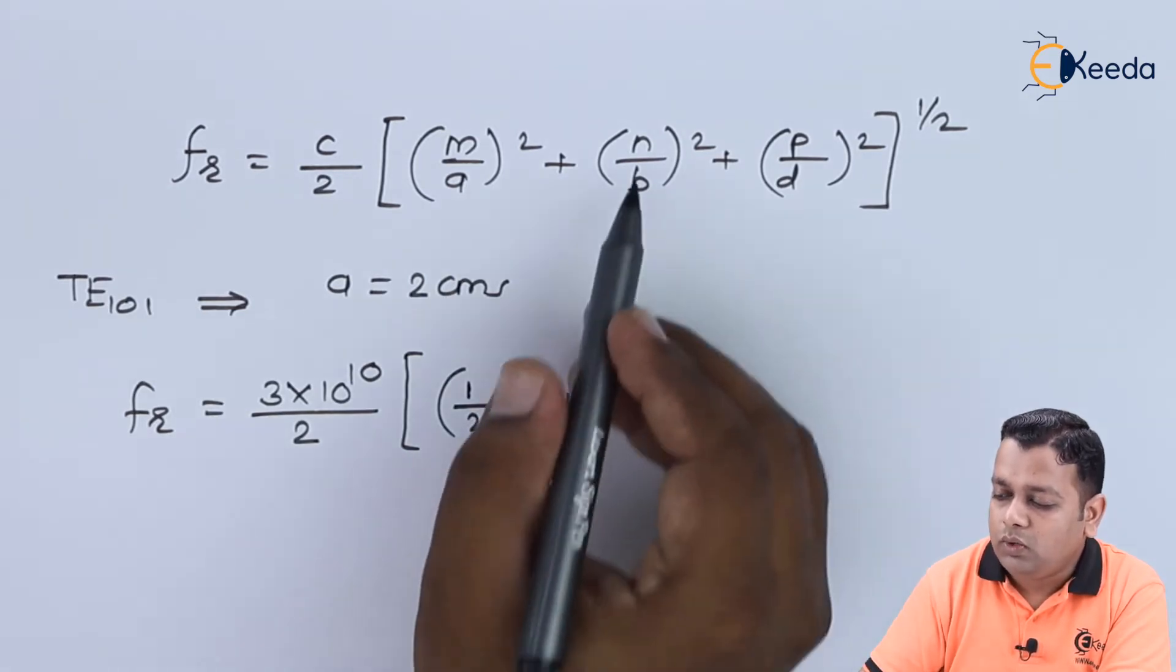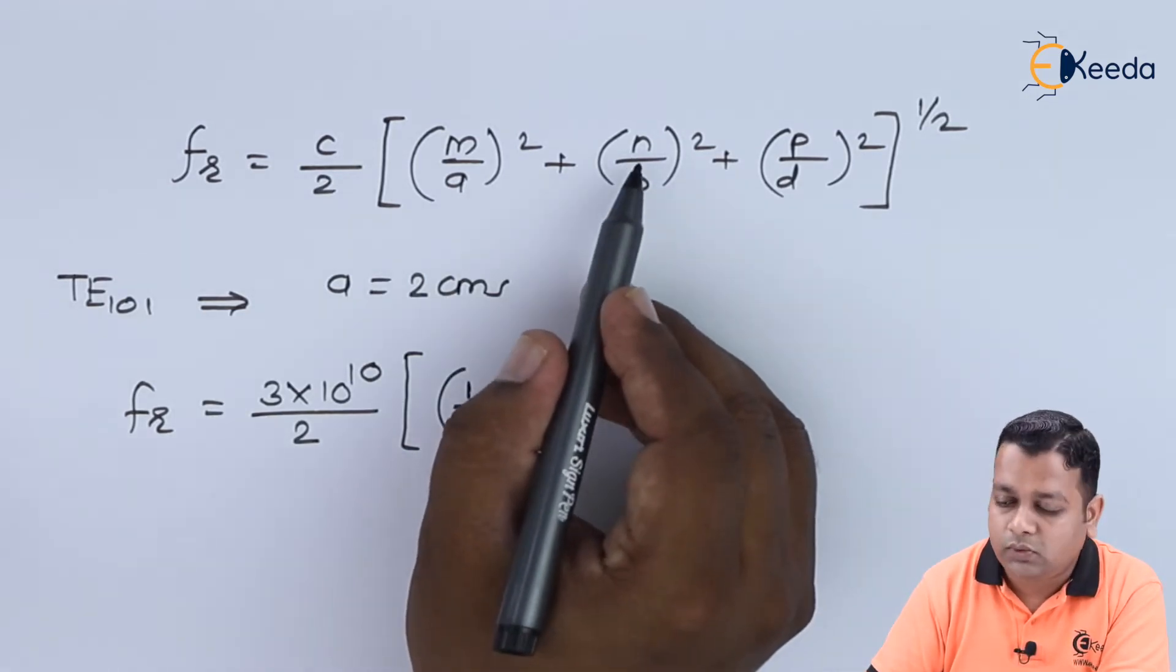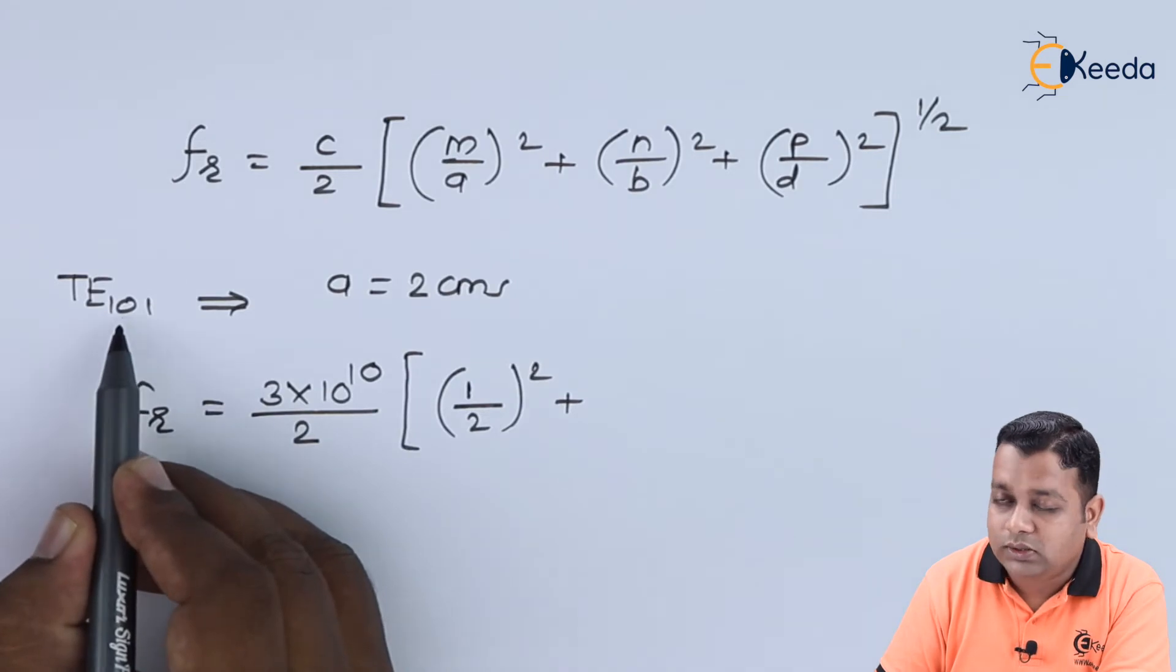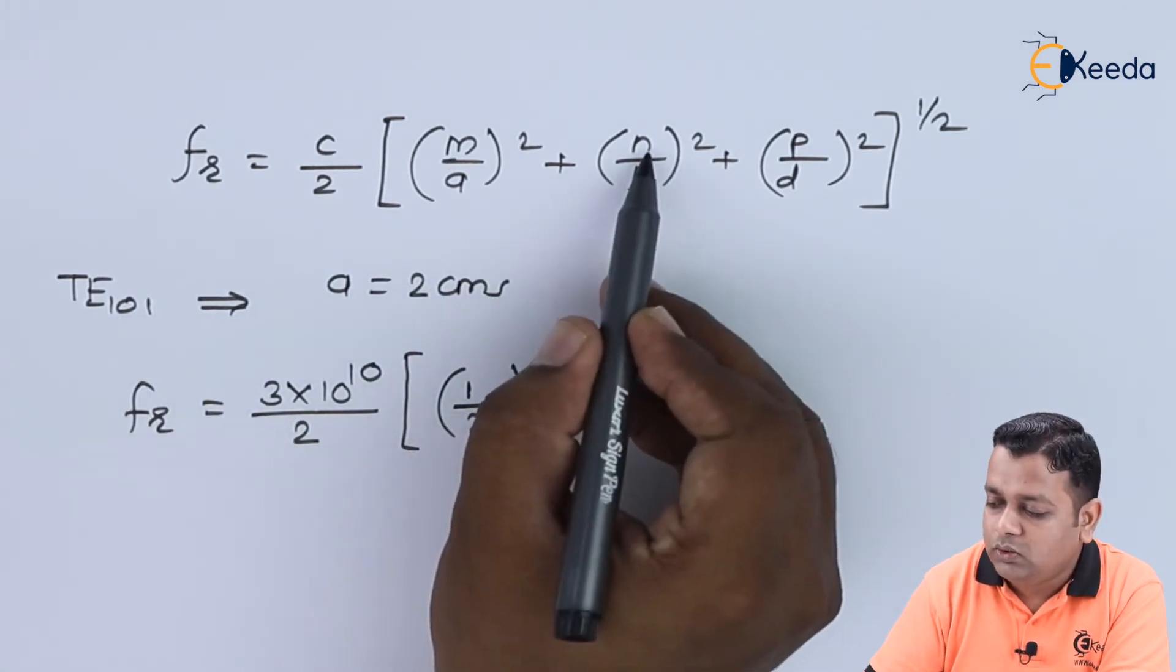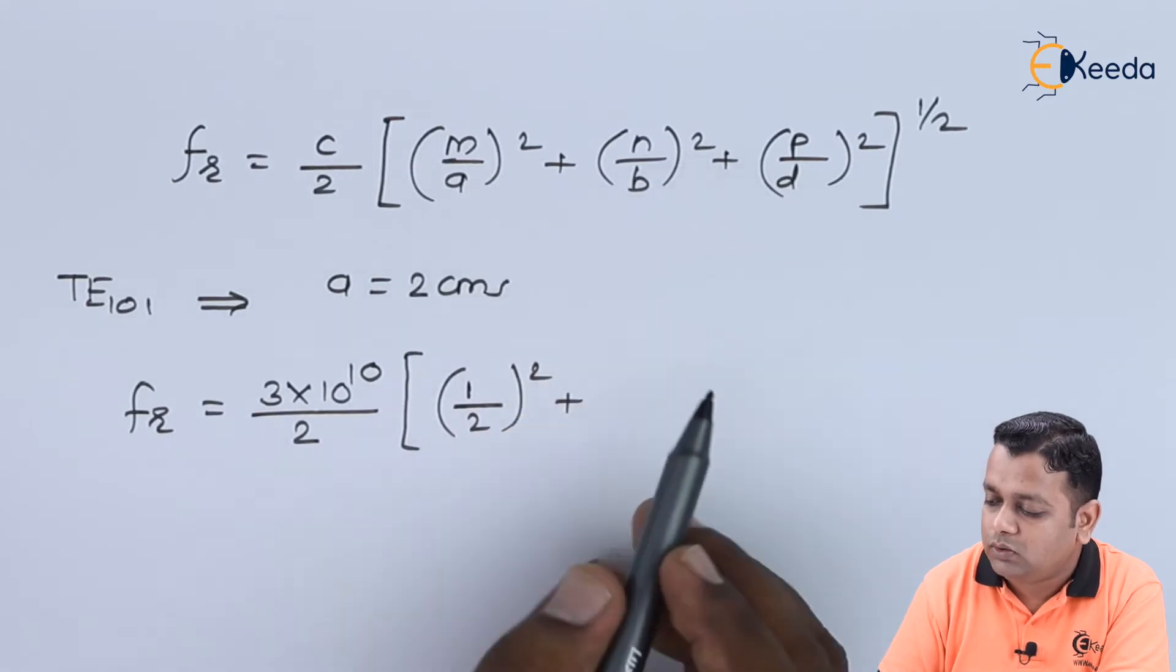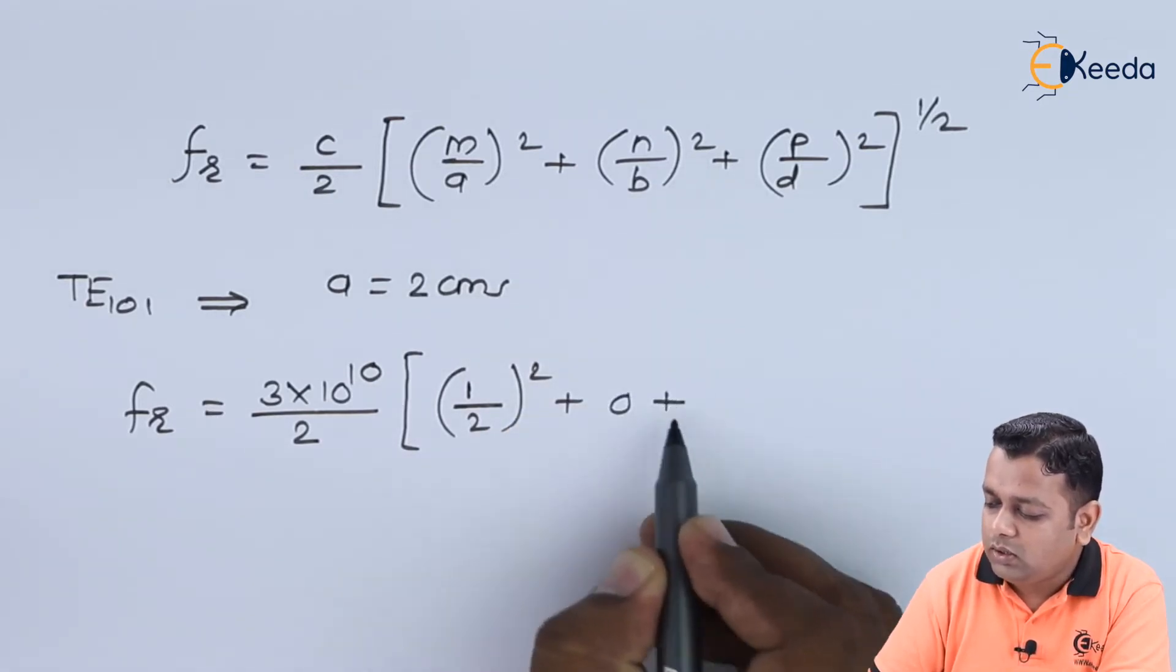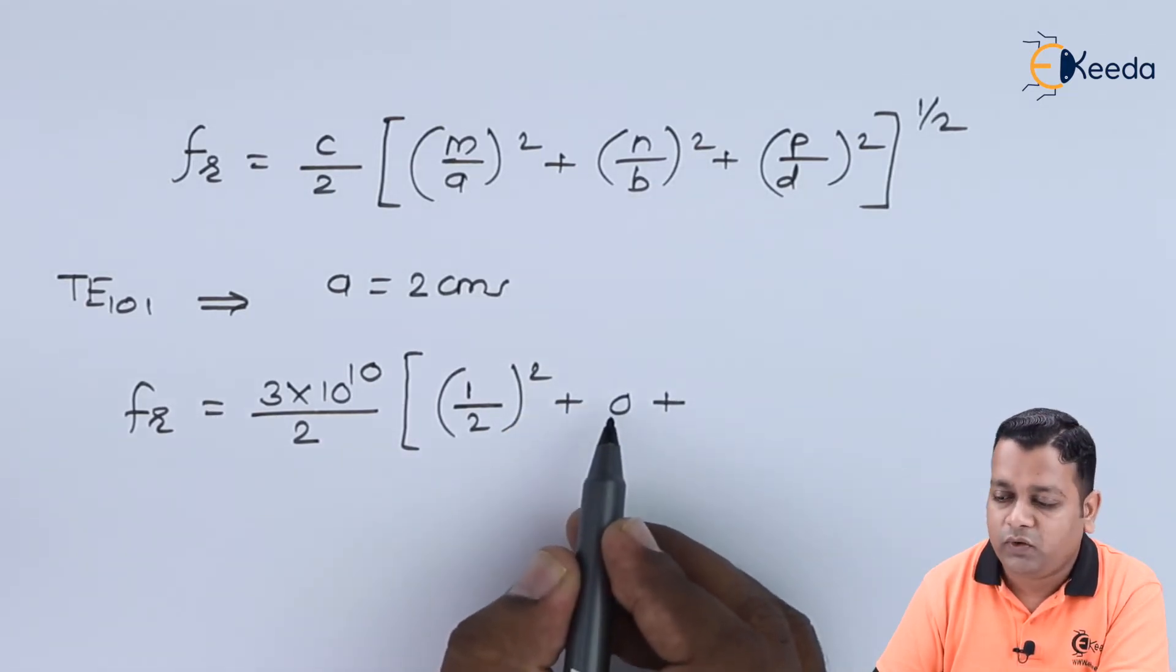n is to be substituted, so as the value is 0, 0 divided by b will be 0. The square of 0 will be 0, so we get the middle term like this.